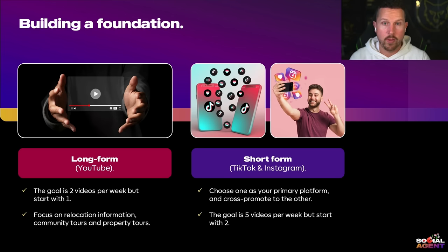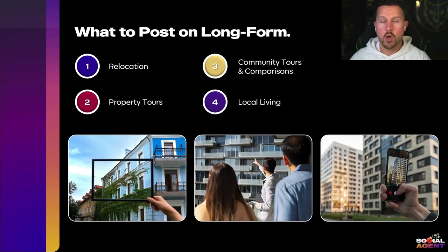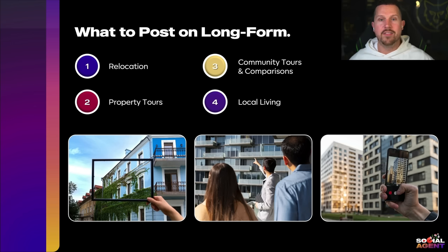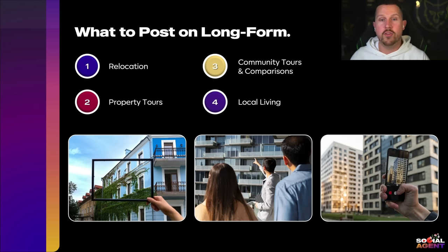For short form, choose one primary platform and cross-promote — if you choose TikTok, cross-promote to YouTube Shorts and Instagram Reels. The goal is five videos a week, but start with two. For long-form content, post relocation topics, community tours and comparisons — for example, 'Auburn Bay versus Mahogany: which community should you live in?' People are always vetting competing communities and those videos get a lot of traction. Also local living content — restaurant interviews with business owners, local amenities, tourist attractions, top hiking spots, and things like that.